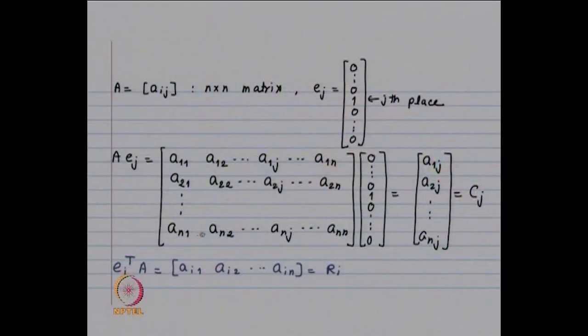We interchange the second and k-th equation. The multipliers m_{i2} will be ã_{i2}^{(1)} divided by ã_{k2}^{(1)}, and then we continue. So, for Gauss elimination with partial pivoting, at every step there may be an interchange of rows, and that interchange of rows can be achieved by pre-multiplying our matrix by a permutation matrix.